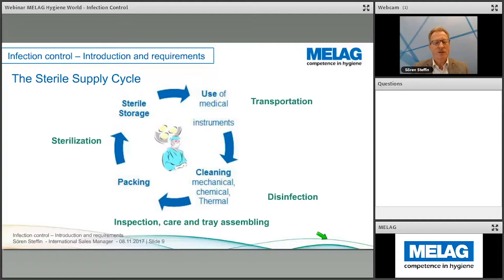Looking at the entire hygiene and reprocessing cycle — the sequence of steps — everything starts with a treatment in a special room. In the best case it's an operating theater, but we often see standard treatment rooms. Used instruments have to be brought to a different area where they are reprocessed. The sequence starts with transportation in a protected case or protected condition, so that infectious instruments cannot spread any microorganisms to other areas, persons, or instruments during transportation.